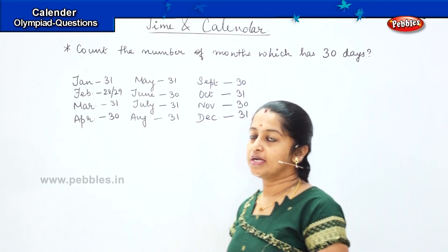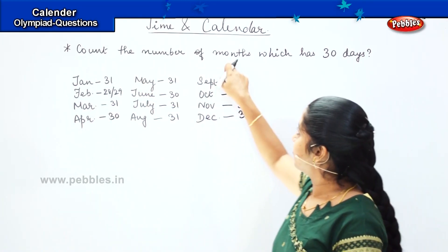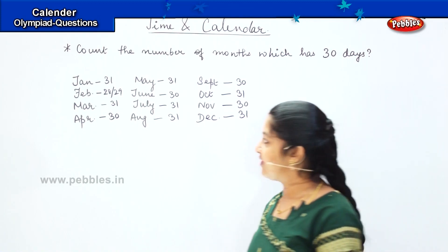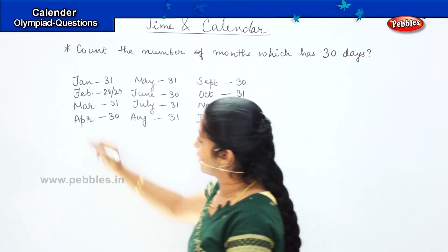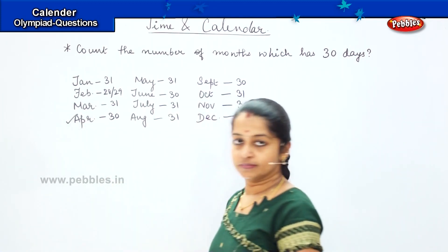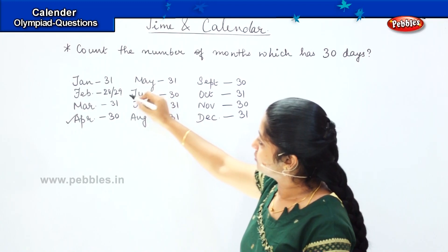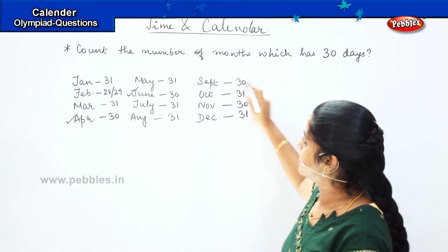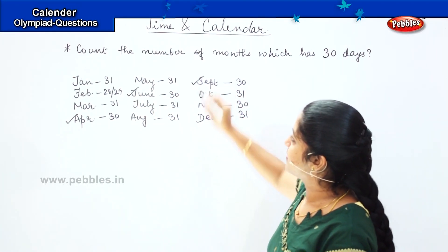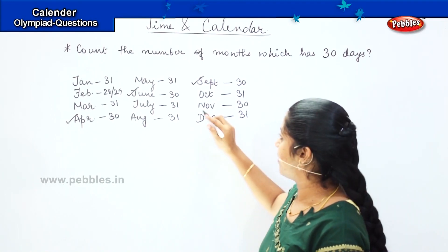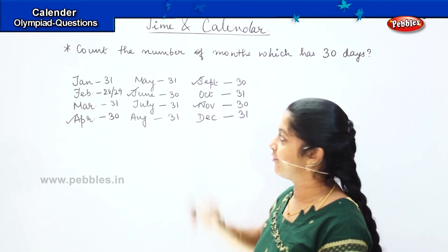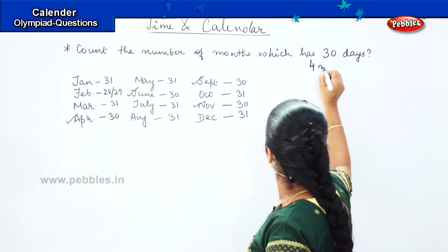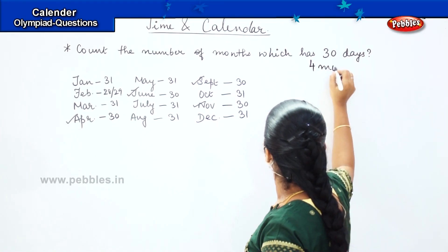My question is: count the number of months which have 30 days. Shall we count? April is 1, June is 2, September is 3, and November is 4. So the answer is 4 months.